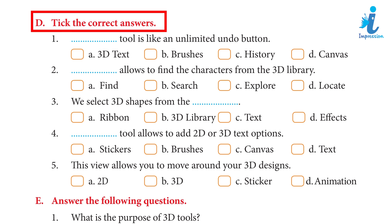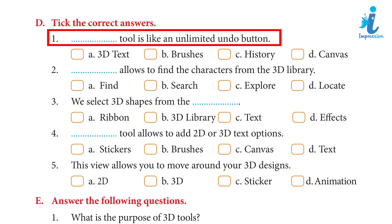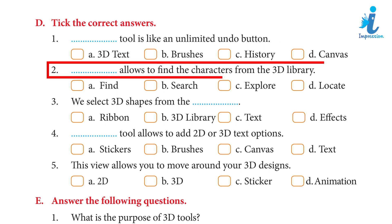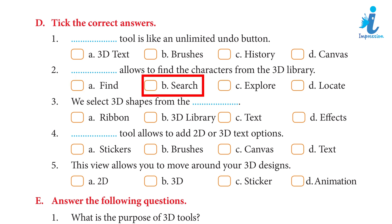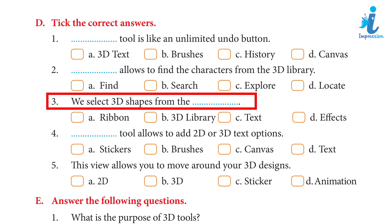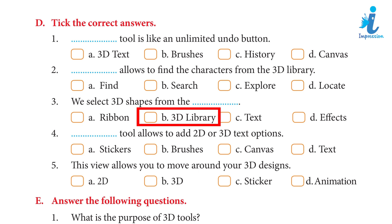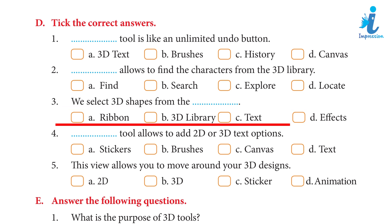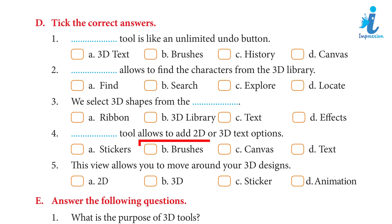Take the correct answers: 1. Dash tool is like an unlimited undo button. A) 3D text, B) Brushes, C) History, D) Canvas. Answer: C) History. 2. Dash allows finding the character from the 3D library. A) Find, B) Search, C) Explore, D) Locate. Answer: A) Find. 3. We select 3D shapes from the dash. A) Ribbon, B) 3D library, C) Text, D) Effects. Answer: A) Ribbon. 4. Dash tool allows to add 2D or 3D text options. A) Tickles, B) Brushes, C) Canvas, D) Text. Answer: D) Text.